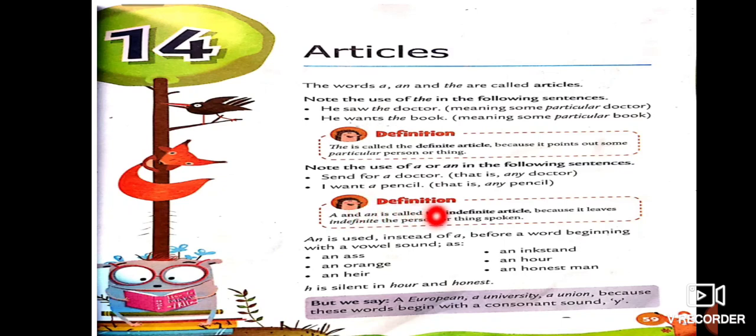Now, see here, definitions are given. A and N is called the indefinite articles. T.H.E. The is definite article. And, A and N are called indefinite articles. Because, it leaves indefinite the person or thing spoken. Now, see, students, here, N is used instead of A, before a word beginning with a vowel sound. For example, see, N-S, N-Orange, then, N-Inkstand, N-R, and N-Honest Man.